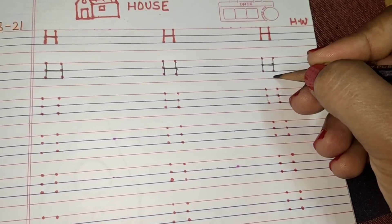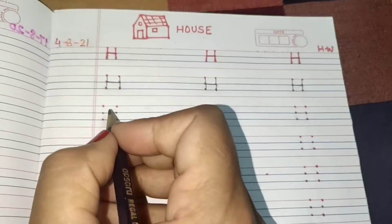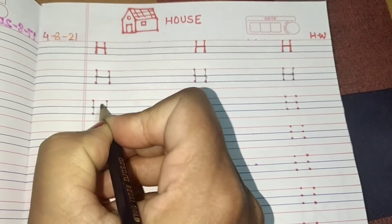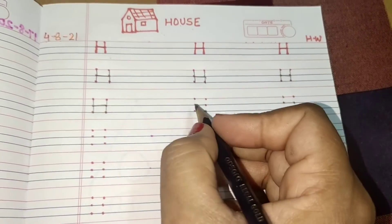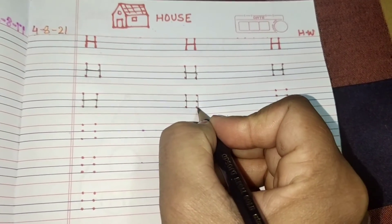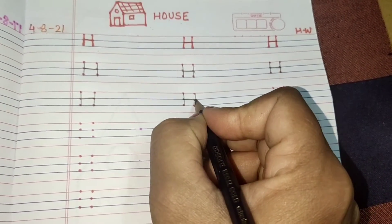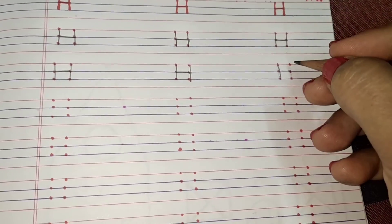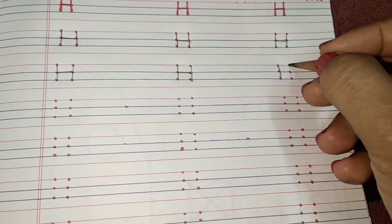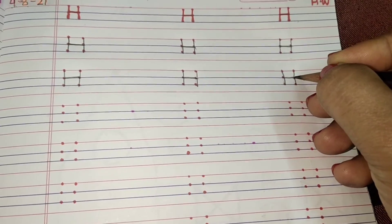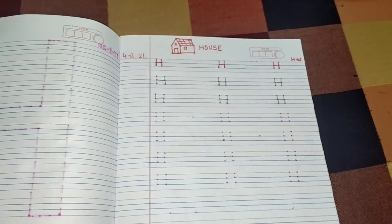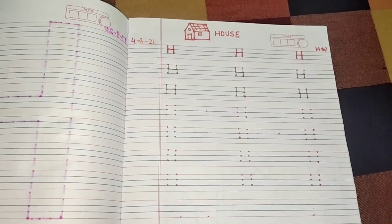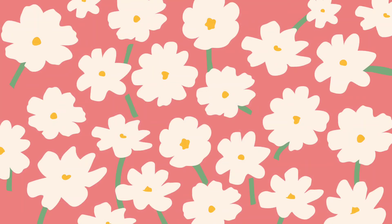Aur aap ko is blue line se neeche nahi jaana hai. Okay, nahi toh aapka H wrong ho jayega. Hume three lines ke andar hi alphabet H ko likhna hai — standing line, sleeping in the middle, standing line, again standing line, sleeping in the middle. Okay, so this time you have to complete this full page and send pictures to ma'am. Bye bye!